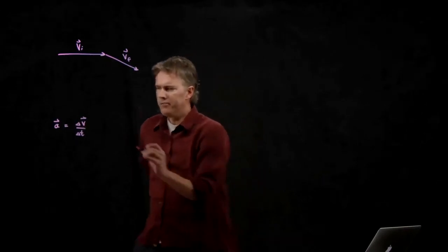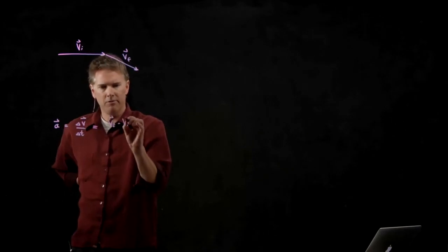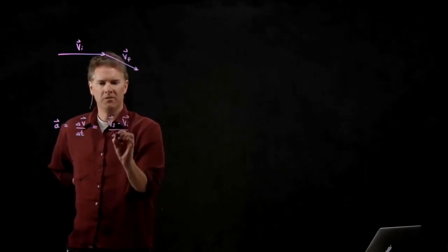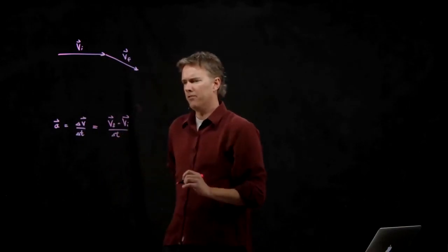Well delta v is v final minus v initial, and then we're going to scale it by delta t. So how do I do v final minus v initial?